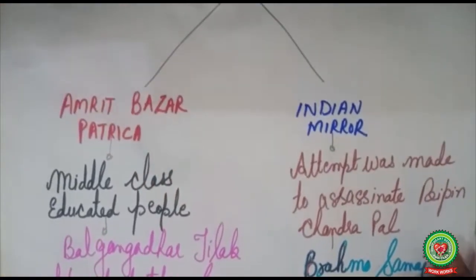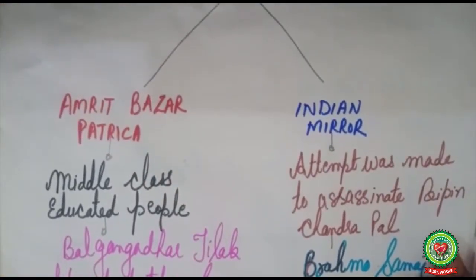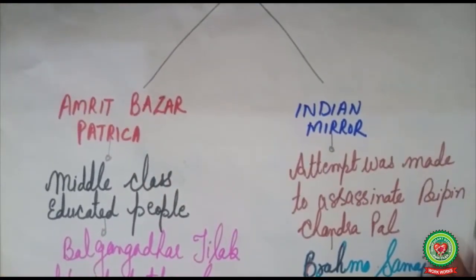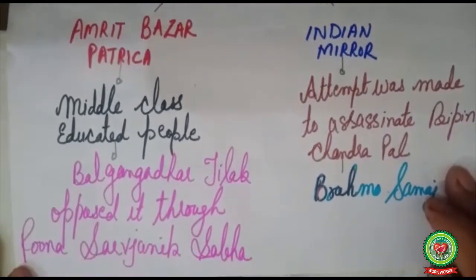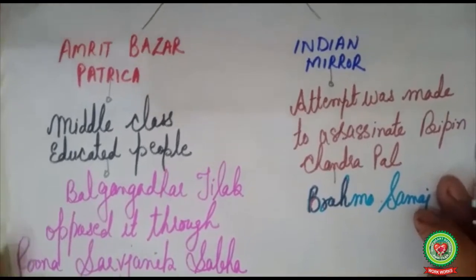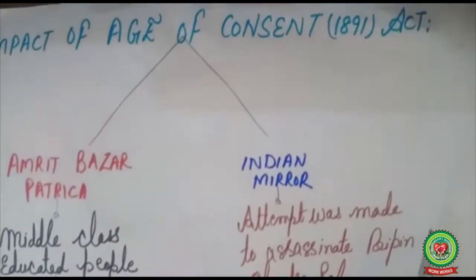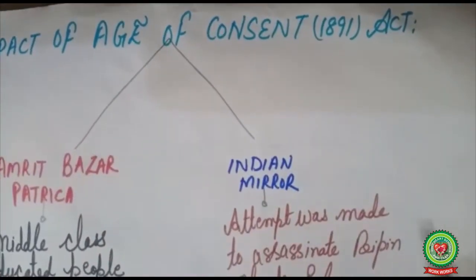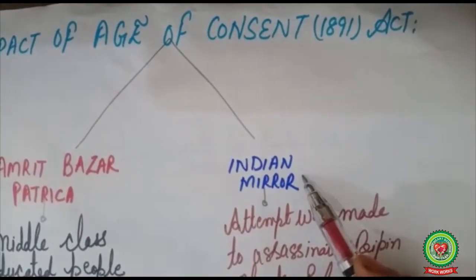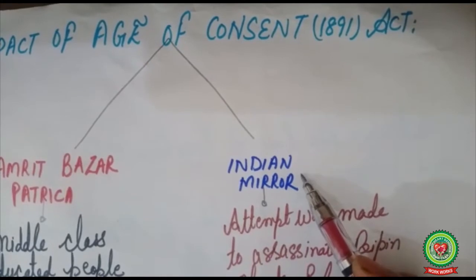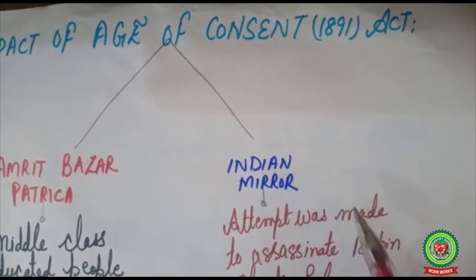According to Tilak, by interfering in the cultural life of Indians, the British were getting another chance to extend their empire in India. Whereas the Indian Mirror, an English newspaper, welcomed the Age of Consent Bill.